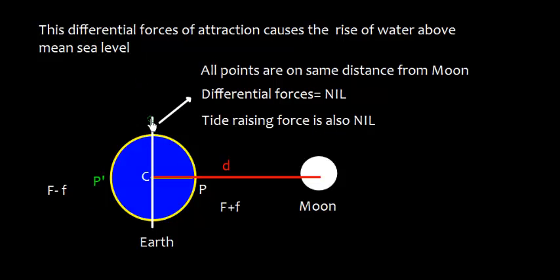Before we talk about net result, let us also discuss about this line: all points on it are on the same distance from the moon, so differential forces are nil here because they are at equal distance, so tide raising force is also nil. However, the difference here at point P and P' will cause the rise of water above mean sea level.